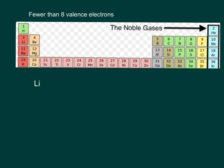We looked at exceptions that have expanded octets. In this video we're going to look at the ones that actually have fewer than 8 electrons. There are only 3 of them — literally just 3 elements to keep track of. They are lithium, beryllium, and boron.